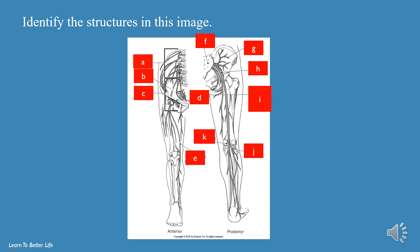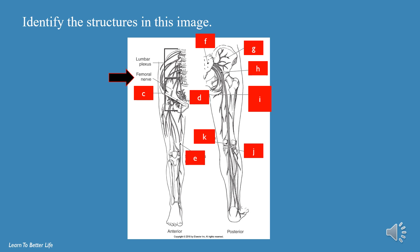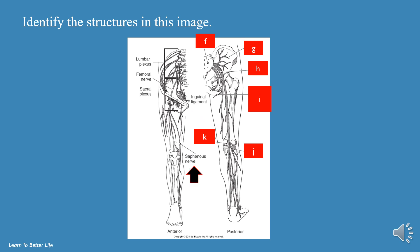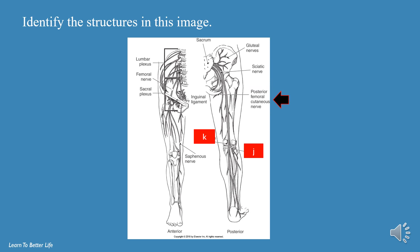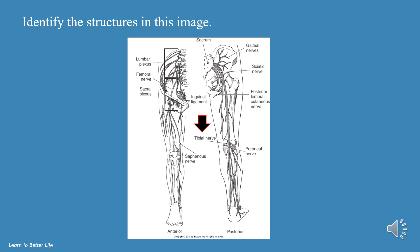Now let's try to identify the structures in this image. Ready? A is the lumbar plexus. B is the femoral nerve. C is the sacral plexus. D is the inguinal ligament. E is the saphenous nerve. F is the sacrum. G is the gluteal nerve. H is the sciatic nerve. I is the posterior femoral cutaneous nerve. J is the peroneal nerve. K is the tibial nerve.